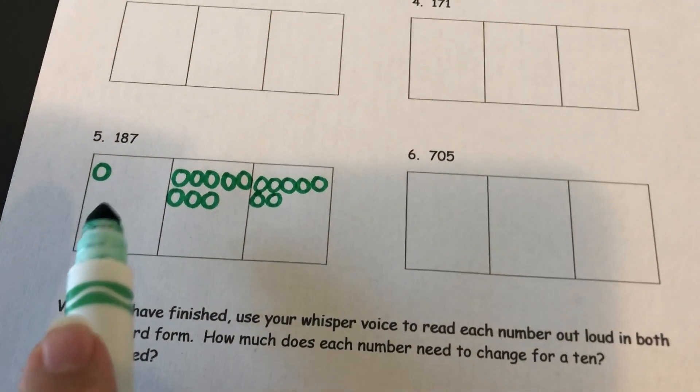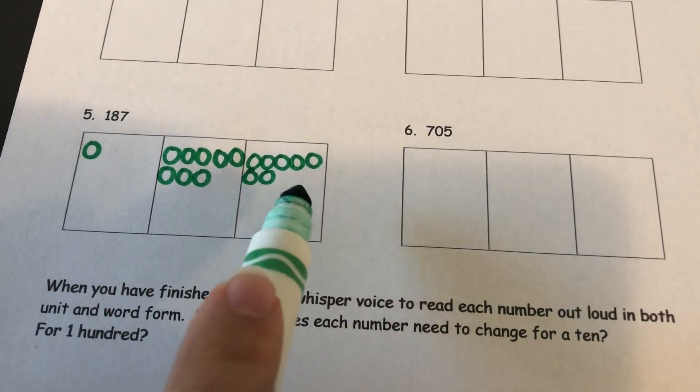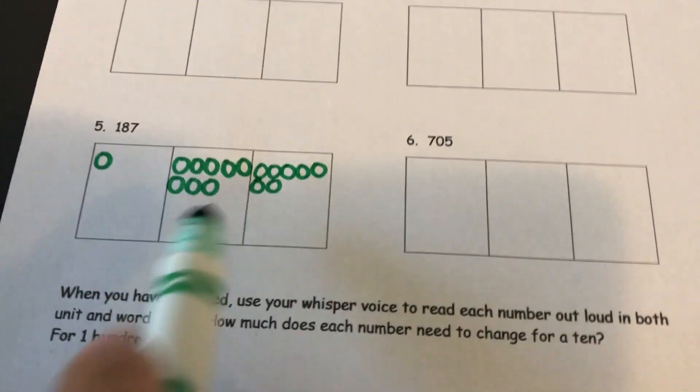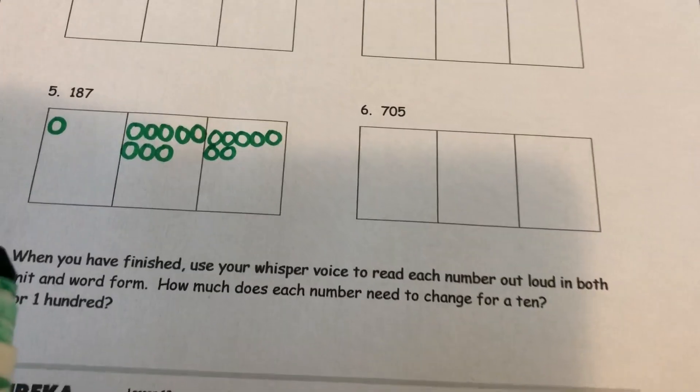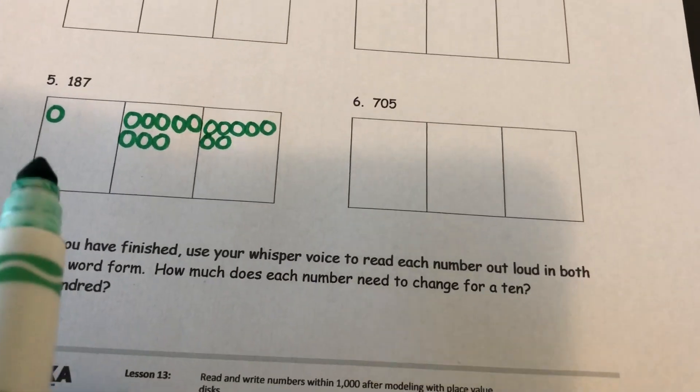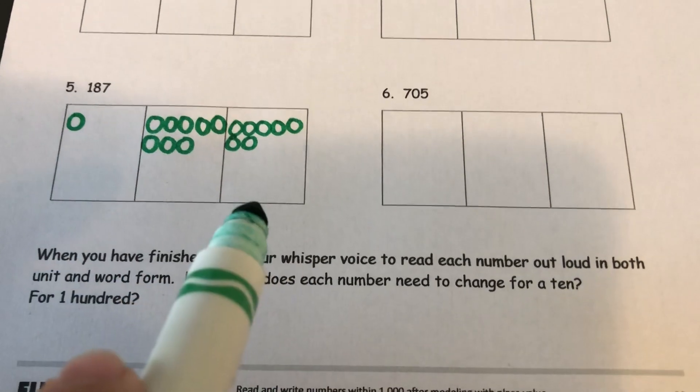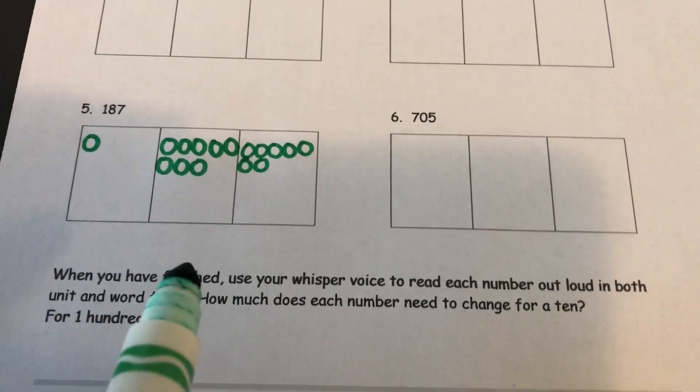Alright so I've got 1 in the hundreds, 8 in the tens, and 7 in our ones place. That is how you would draw these out. You would just draw a circle in the correct place value for each number and you'll do the same thing for your whole homework.